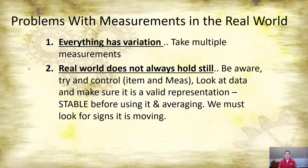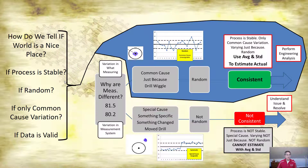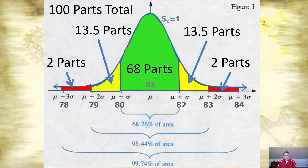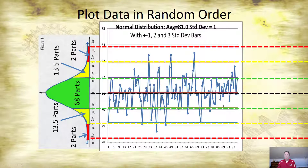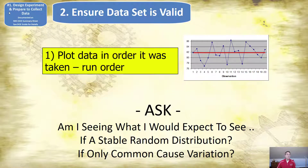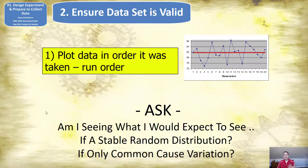When we're doing our experiments: everything has variation, the real world doesn't always hold still. So how do we tell if the process is stable — if it's random? We remember the normal distribution turned on its side: if we plot points, they should be randomly spread, most in the center, a few out, but no special pattern. So after we design our experiment and collect the data, the next thing we do is make sure the data is valid — we plot the data in the order it was taken.